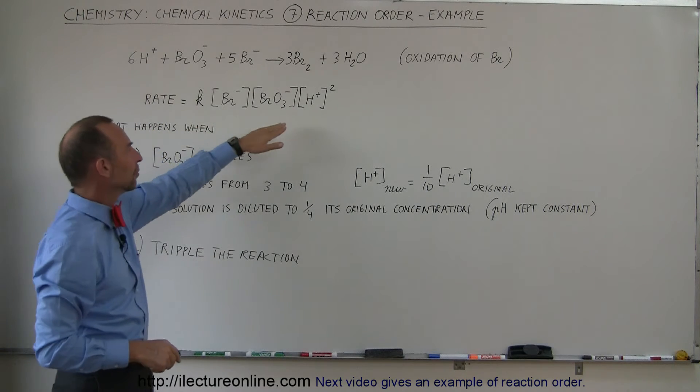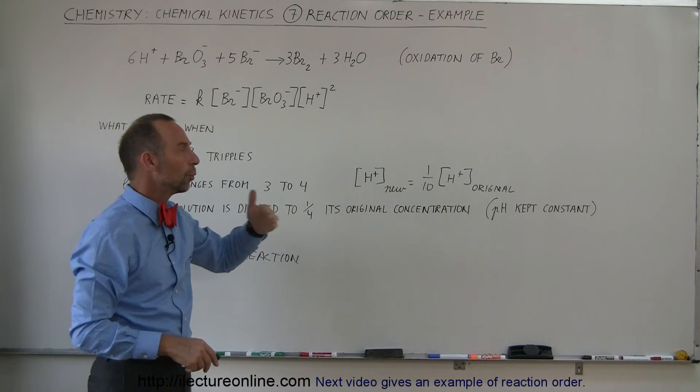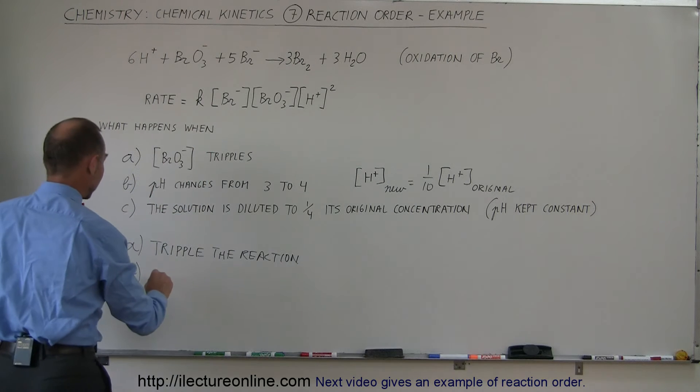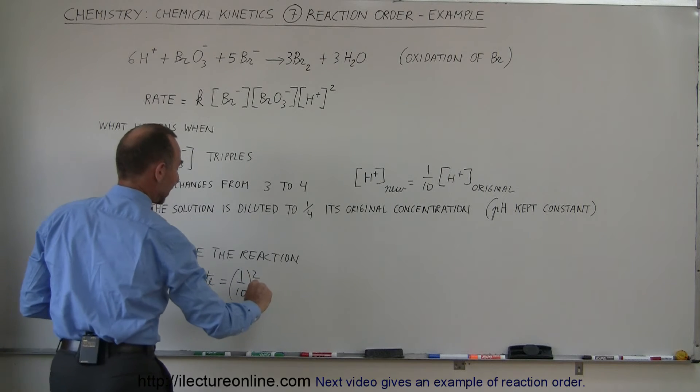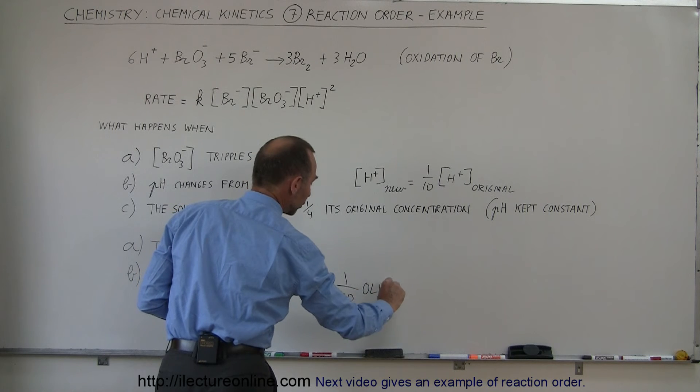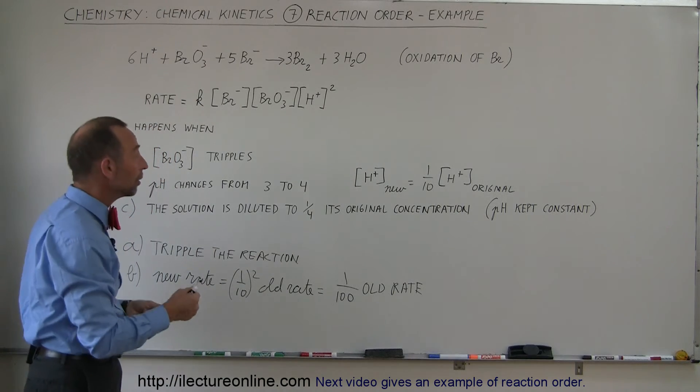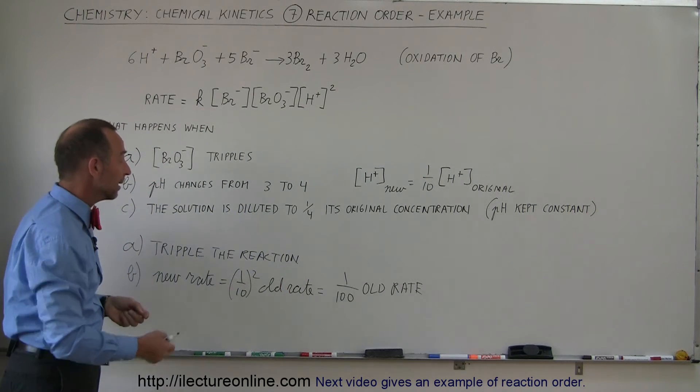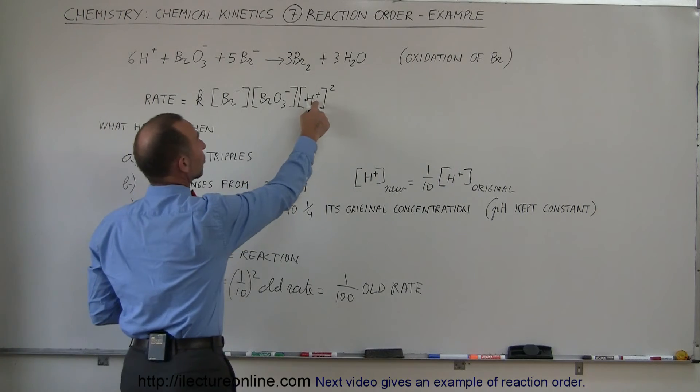All right, since the reaction rate is proportional to the concentration squared, and if we go to 1/10 the original concentration, that means the reaction rate is 1/10 squared. So therefore, we can say the new rate is equal to 1/10 squared times the old rate, which means it's 1 over 100 times the old rate. So by increasing the pH by one point, going from 3 to 4, the concentration changes to 1/10 the original concentration for the hydrogen ion. That means the reaction rate is now 1/100. We take that 1/10 squared because the hydrogen ion concentration has an order of 2.